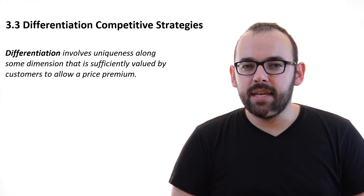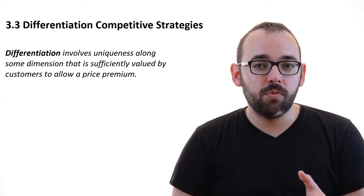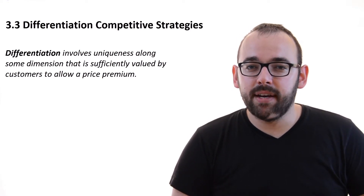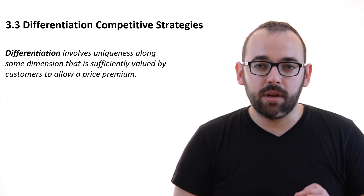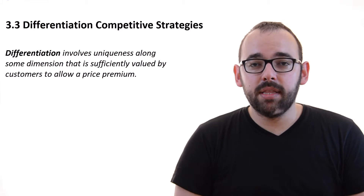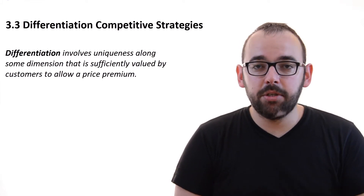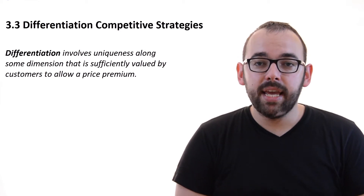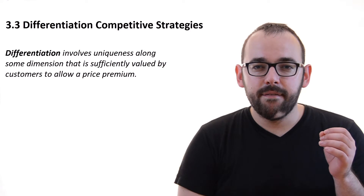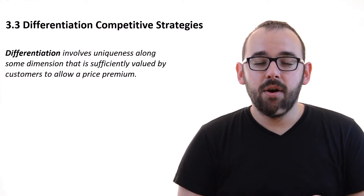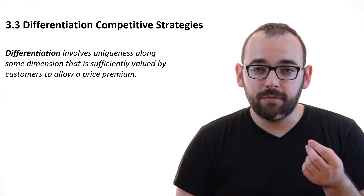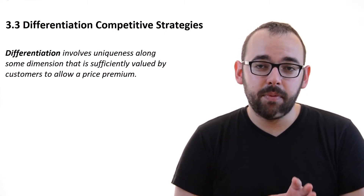Now it is not so easy to be able to charge customers much more than what the average competitor charges. How can you achieve that? We already have that in the definition. We need to identify some dimension which is valued by our customer and then offer great value on this dimension. For example, with clothing stores, one dimension valued by customers might be the size and variety of the offering. So we can focus on having very large shops with a large variety of offer, because this is the dimension identified as valued by our customers.